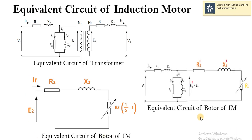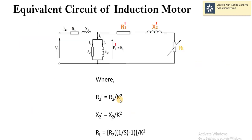Here the parameters on the rotor side are taken to the primary side, hence denoted by dash. Whenever the parameters of the secondary side are taken to the primary side, they are denoted by dash and the actual value is always divided by k squared. Therefore r2 dash equals r2 divided by k squared, similarly x2 dash equals x2 divided by k squared, and similarly for r_L.